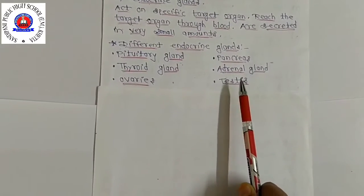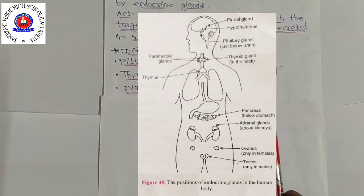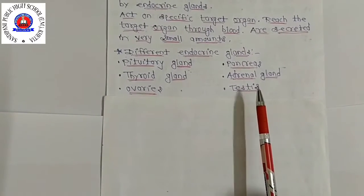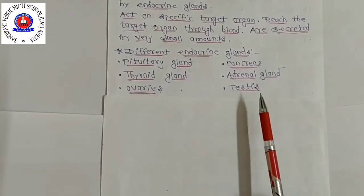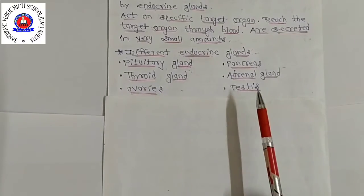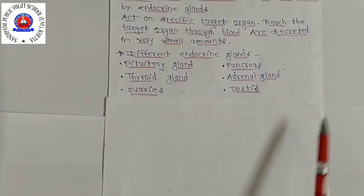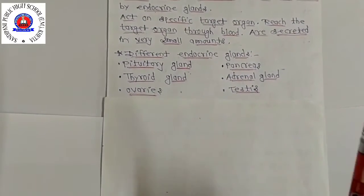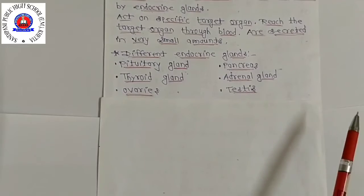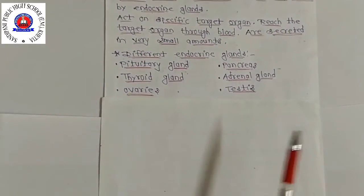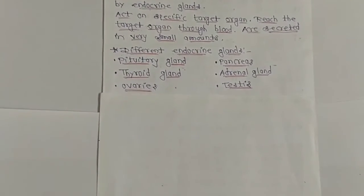Testes are the glands present only in males. The testes make the male sex hormone called testosterone. The function of testosterone is to control the development of male sex organs and male features such as deeper voice, beard, and more body hair. All these changes caused by testosterone are associated with male puberty, which boys attain at the age of 13 to 14 years. The testes also make the male gamete called sperm.